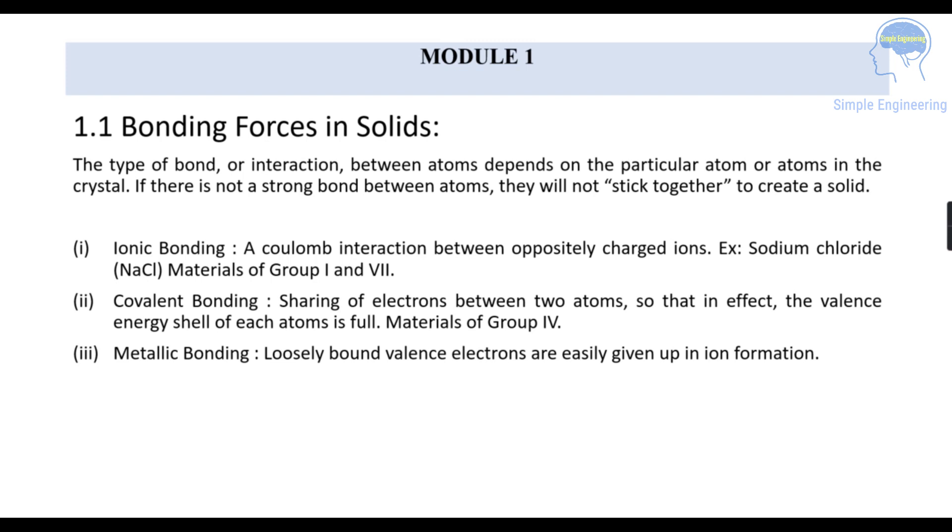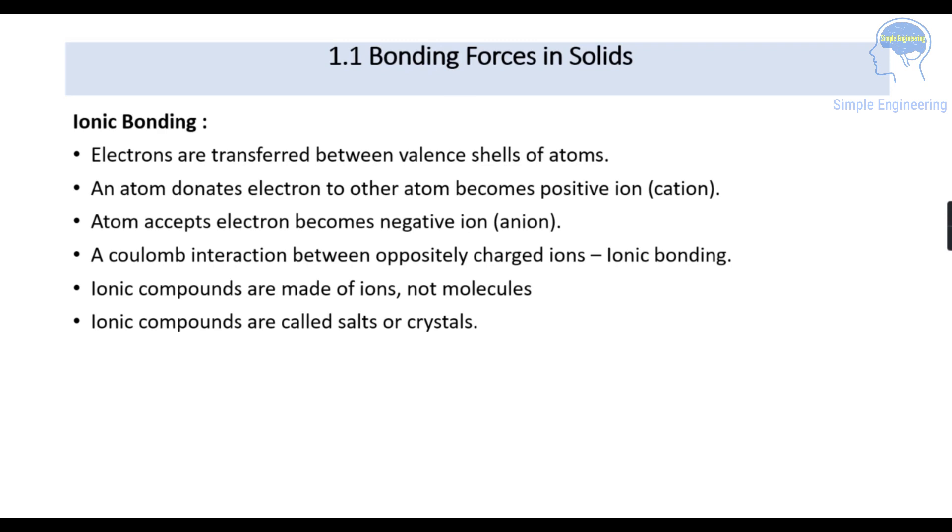In metallic bonding, loosely bound valence electrons are easily given up in ion formation. Going into detail about ionic bonding, electrons are transferred between valence shells of atoms. An atom that donates an electron to another atom becomes a positive ion called cation, and if an atom is accepting an electron, it becomes a negative ion called anion.